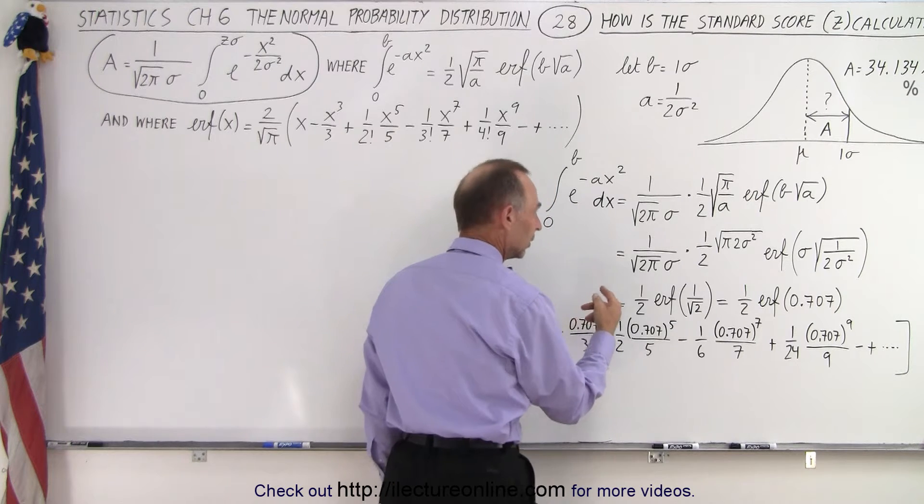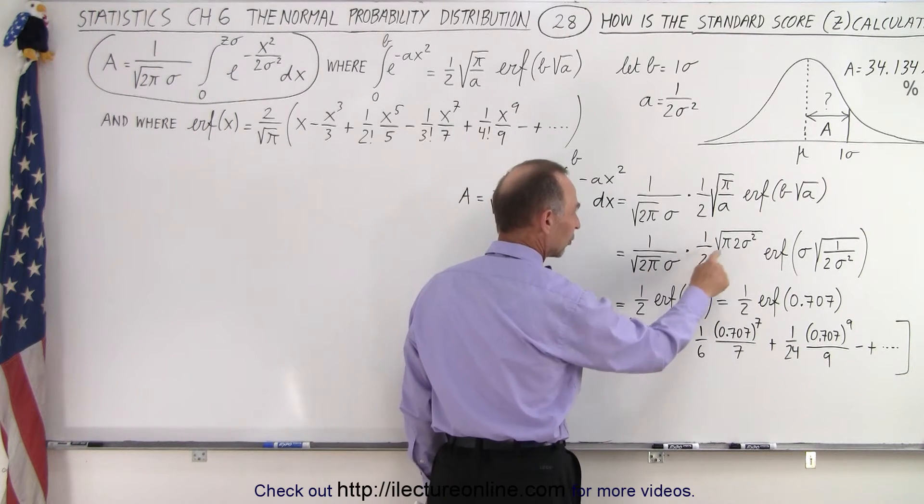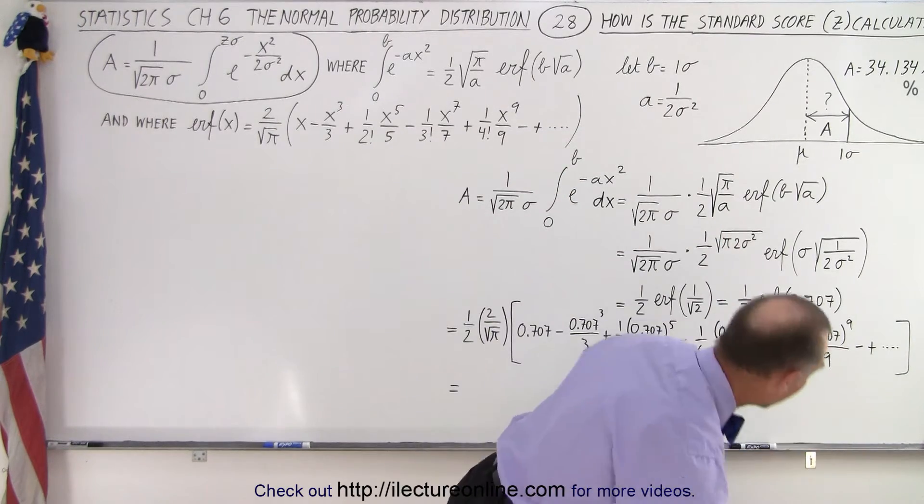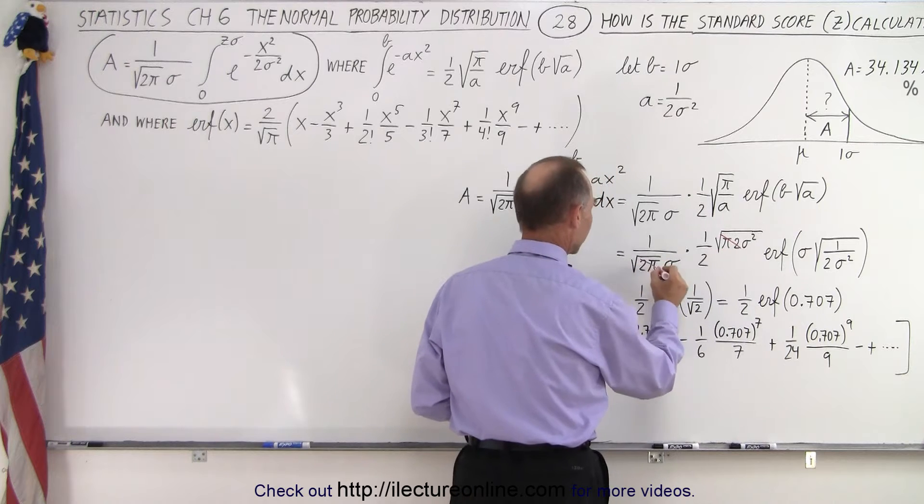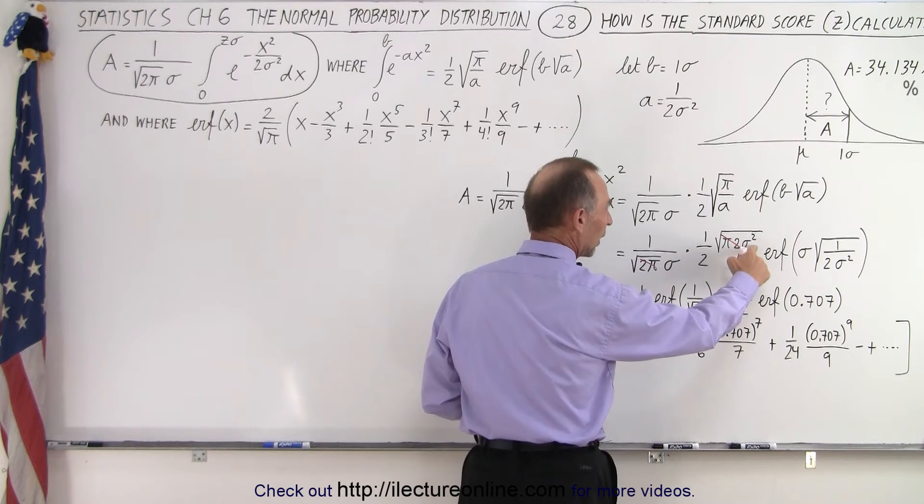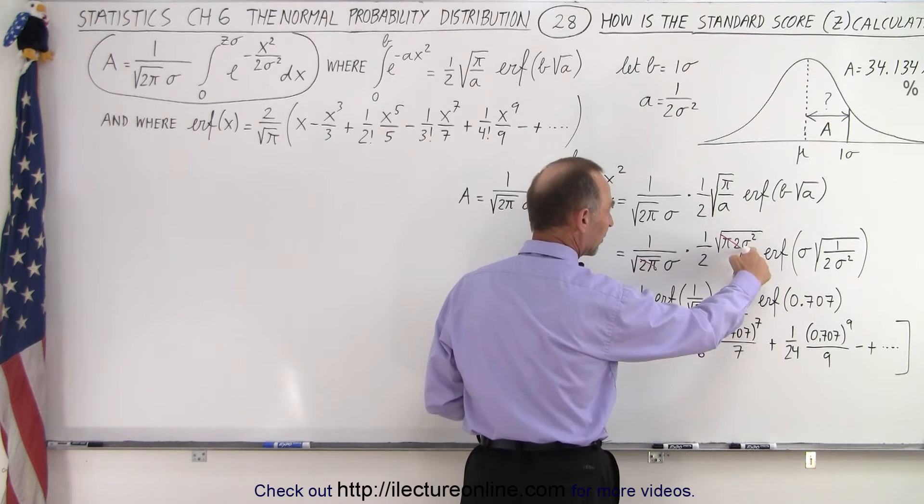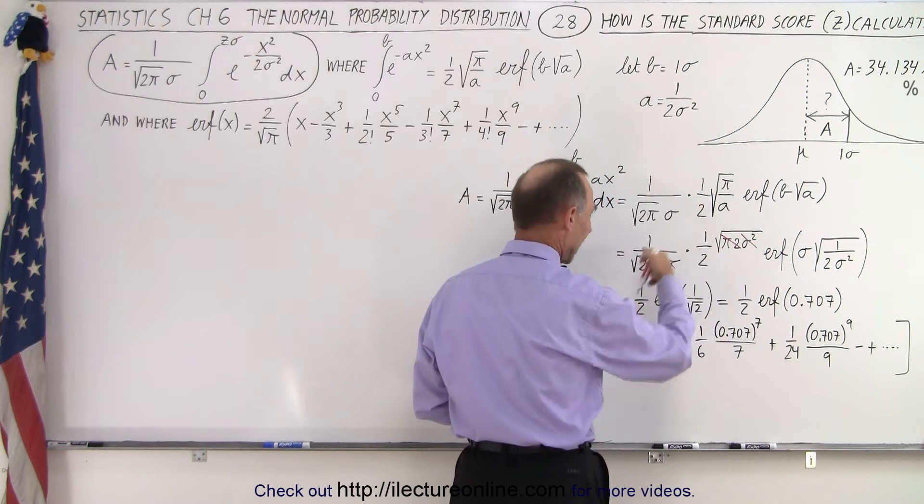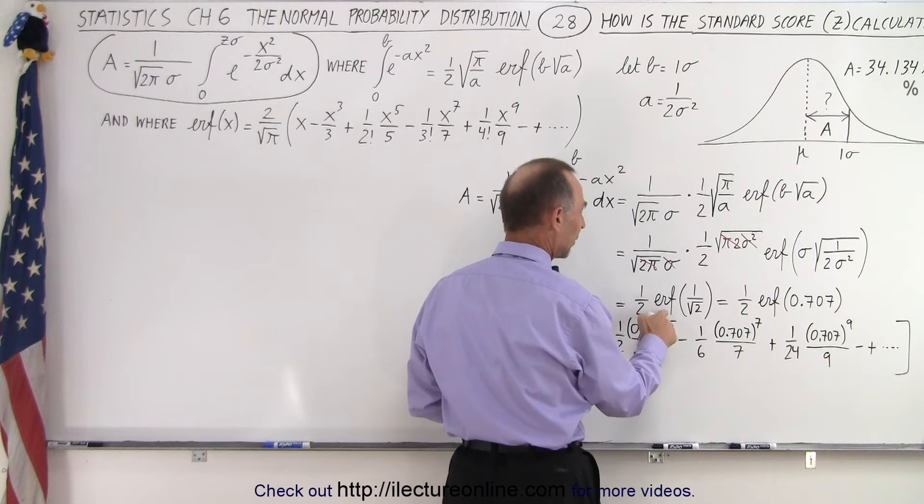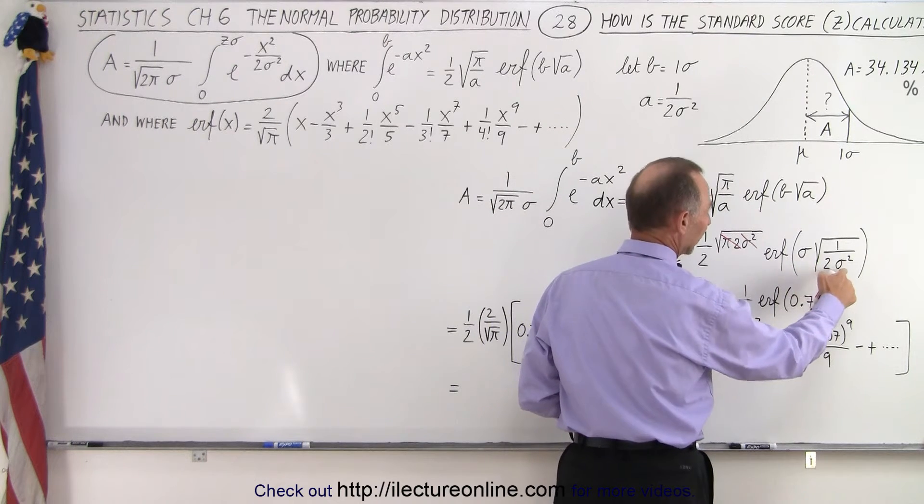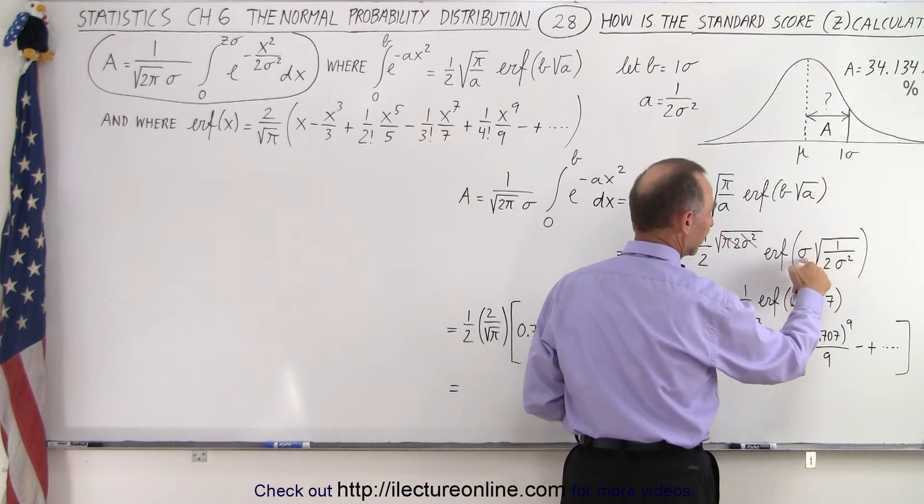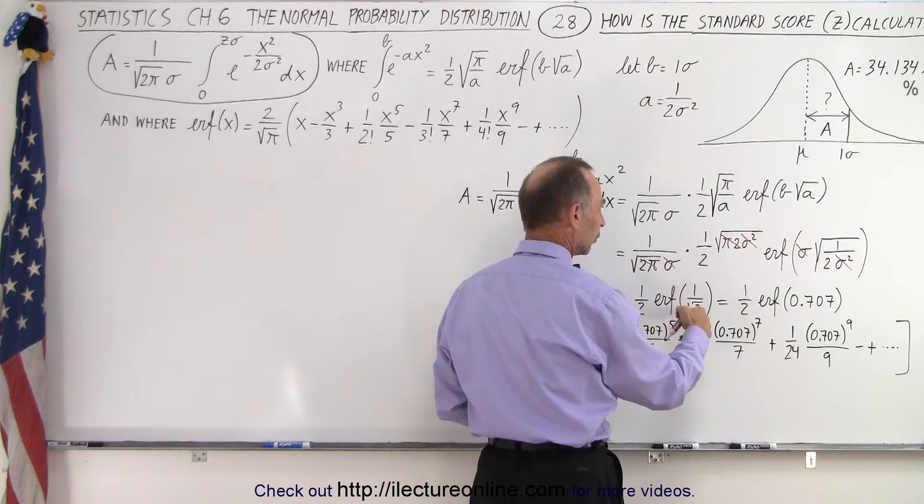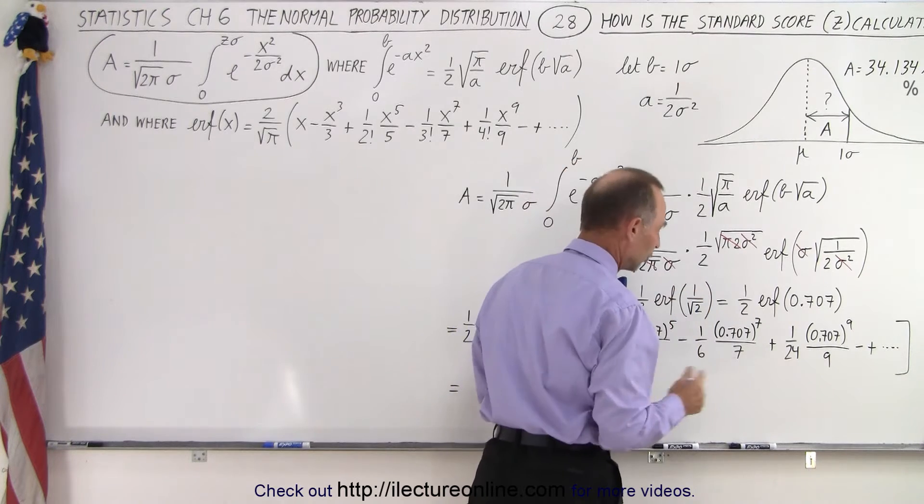Then we do a little simplification. We have the square root of 2π here and the square root of 2π there, so that cancels out. So let me get another color so we can see how we simplify that. So this simplifies with this. And σ squared underneath the radical simply becomes σ, and we have a σ in the denominator, so this cancels with this. And we're simply left with 1 half up here. Now we have the error function of, notice that this σ squared in the radical and this σ cancels out, and we're left with the square root of 1 over 2, or simply 1 over the square root of 2. Same thing.